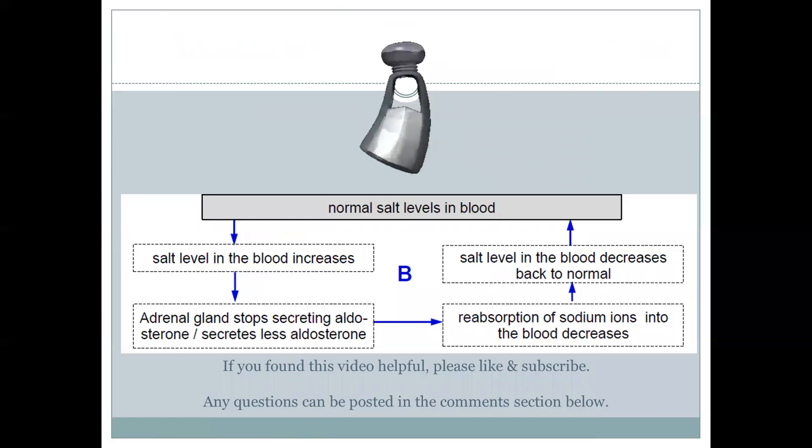To summarize this process, from a normal blood salt level, the level was increased probably due to the intake of excessive salt within the diet. The adrenal gland would be the control center which will stop secreting aldosterone or secrete less aldosterone.